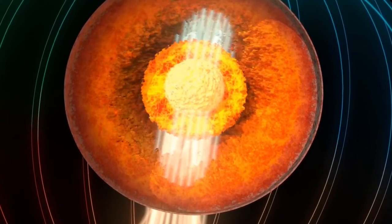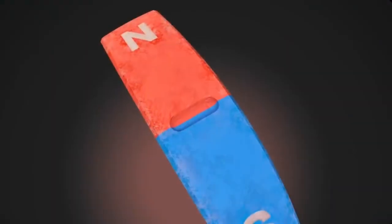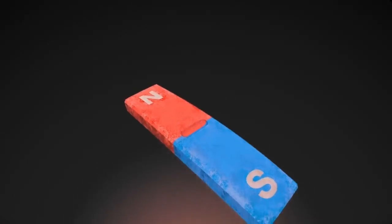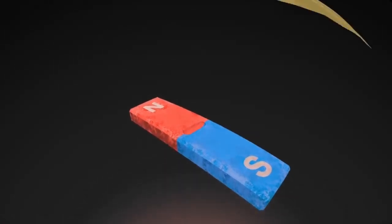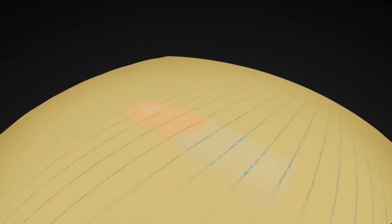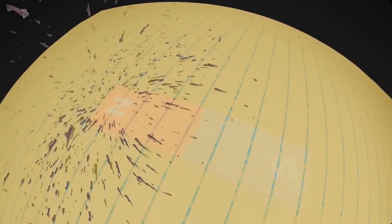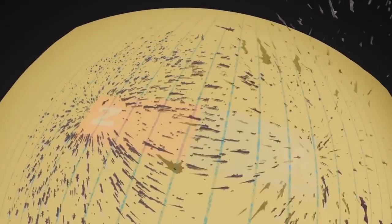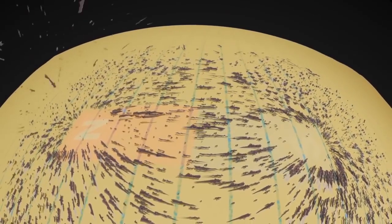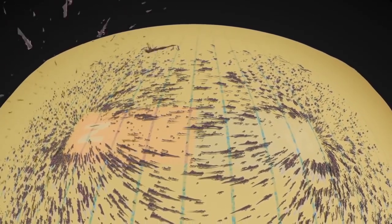This geodynamo turns Earth into a large bar magnet with north and south poles. We can see a bar magnet's magnetic field by dropping iron filings on a piece of paper above the magnet. The filings line up with the direction of the magnetic force. Earth's magnetic field has these same lines of force connecting its north and south poles.